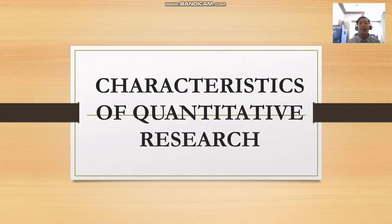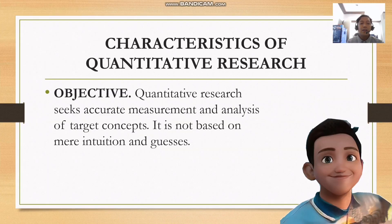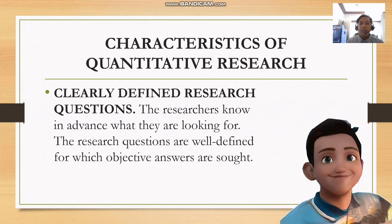So let's discuss about the characteristics of quantitative research. The first one is objective. Quantitative research seeks accurate measurement and analysis of target concepts. It is not based on mere intuitions and guesses. Data are gathered before proposing a conclusion or solution to a problem. The next one is clearly defined research questions. The researchers know in advance what they are looking for, and the research questions are well defined for which objective answers are sought.